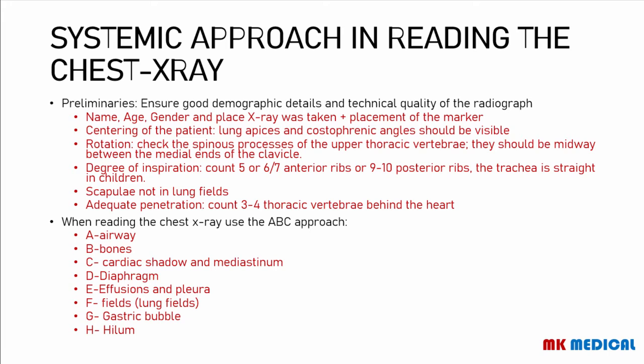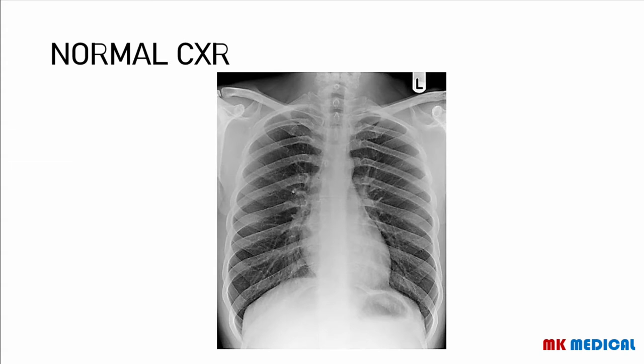I won't go into so much detail about the lung fields because I want to reserve that for the next review lecture video, where we'll distinguish patterns affecting the alveoli versus the interstitium. Here's a picture of a normal X-ray. You should check the demographics, the marker, and ensure the X-ray is well-centered so that the medial ends of the clavicles to the spinous processes have equal distance on both sides. You should be able to visualize the thoracic vertebrae even behind the heart, count 9 to 10 posterior ribs, 5 to 6 anterior ribs with the 7th rib piercing the diaphragm. The costophrenic angles should be visualized, the apices of the lungs should be visualized, and the scapulae shouldn't be in the lung fields.